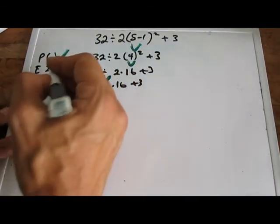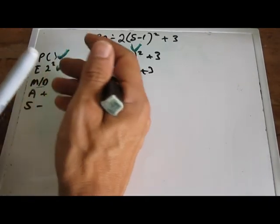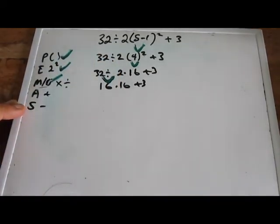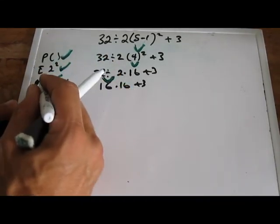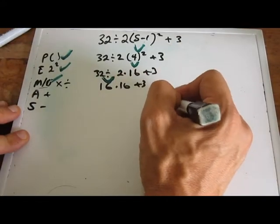Now what do we have left? So we check off division is done, right, put a little check next to division. Oh. Are there any multiplication? Oh, there's still multiplication though. Multiplication comes before addition, which is the last thing we have on there. So we're going to go 16 times 16.